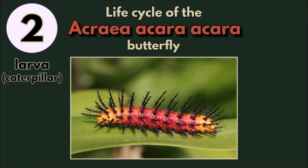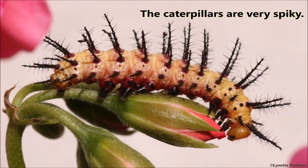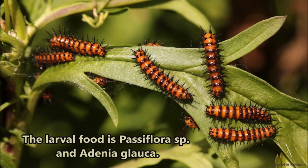Number two: larva or caterpillar. The caterpillars are very spiky. The larval food is Passiflora species and Adenia bloca.